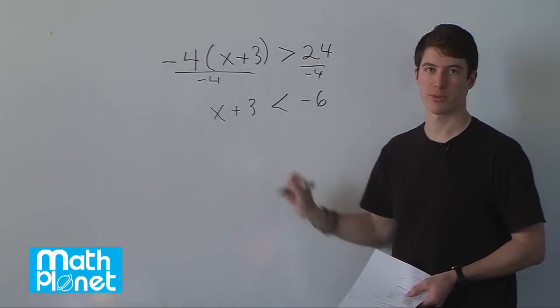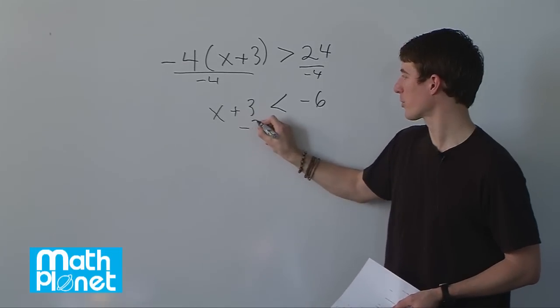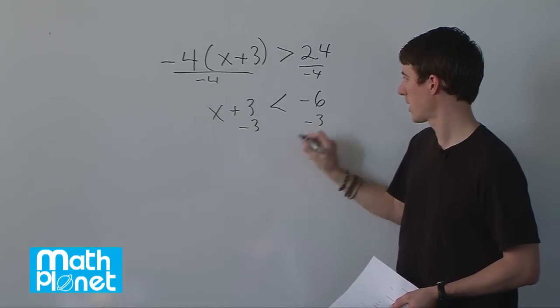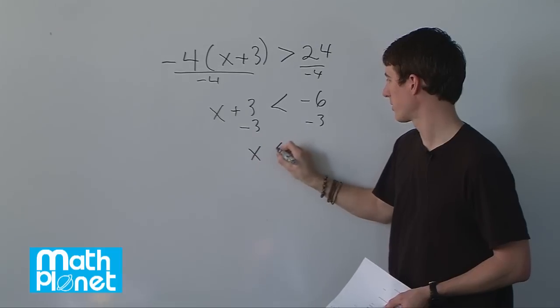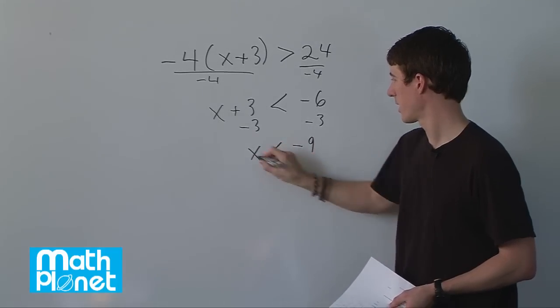So now we have x almost by itself. We just have one extra term. We need to subtract 3 from both sides. And then we just have x is less than negative 9. And that's our final answer.